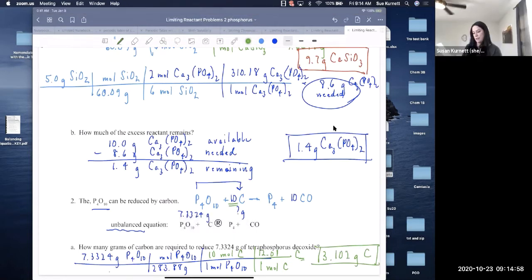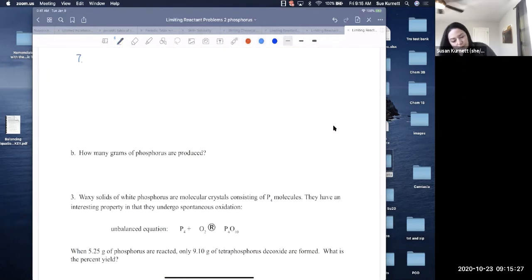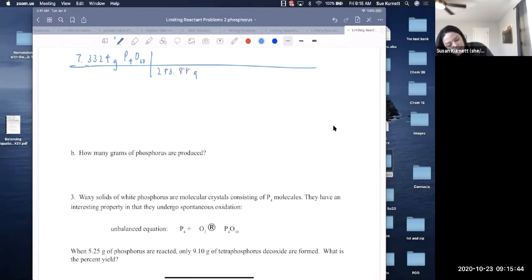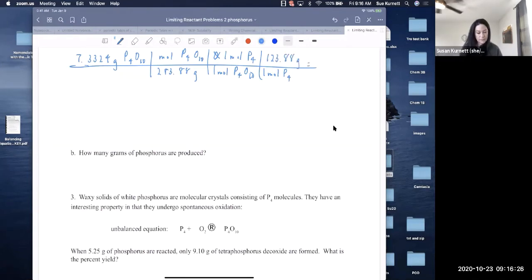Next question. Let's see. How many grams of phosphorus are produced? Because this is B and this was A, I'm going to assume that we have the same starting amount. So this time I'm going to go from reactant to product and do part B.